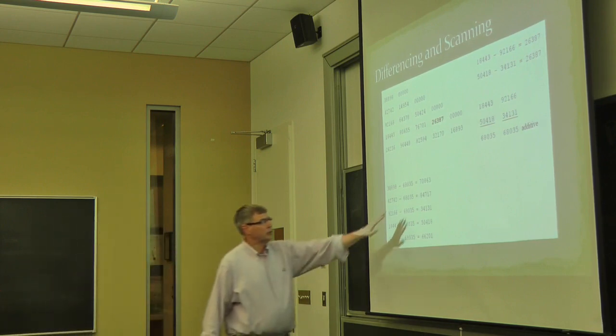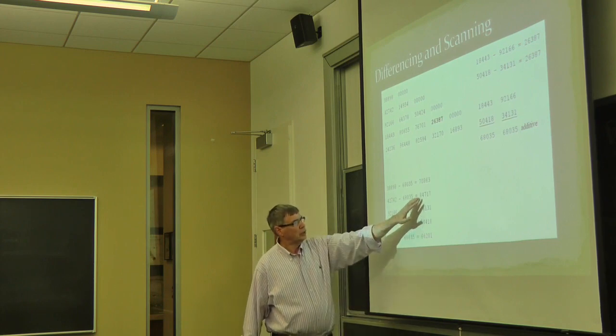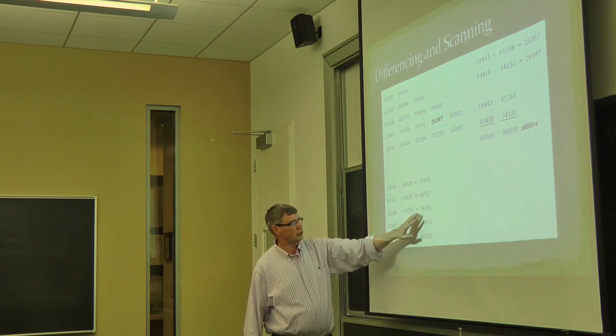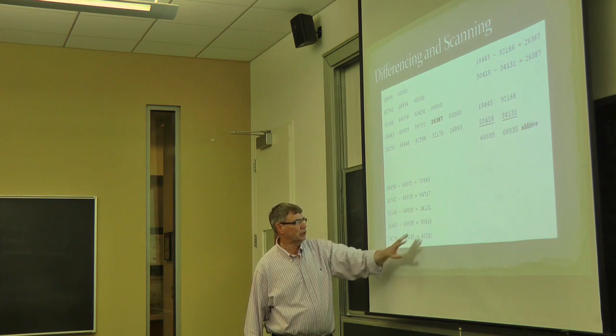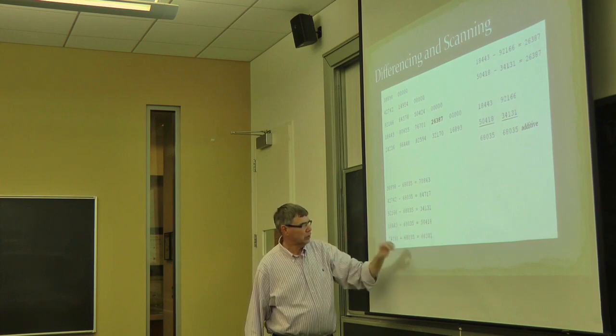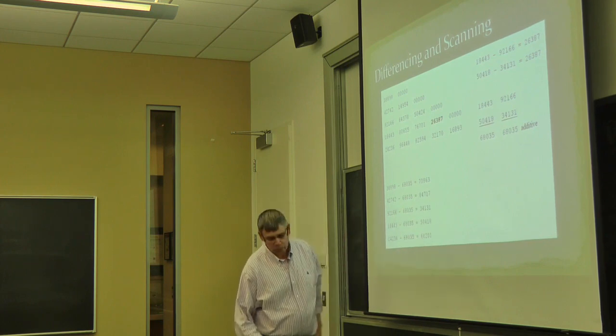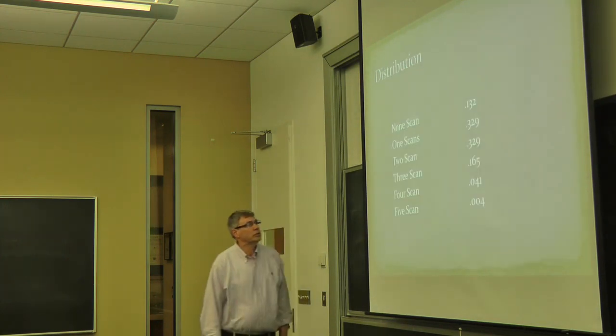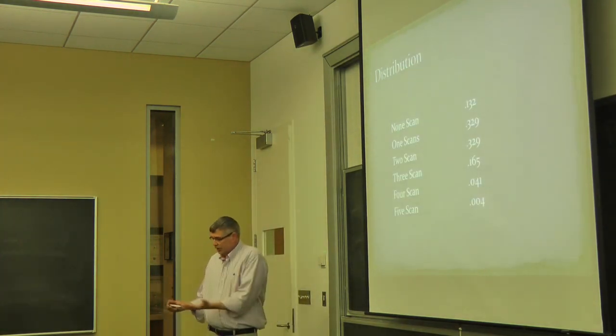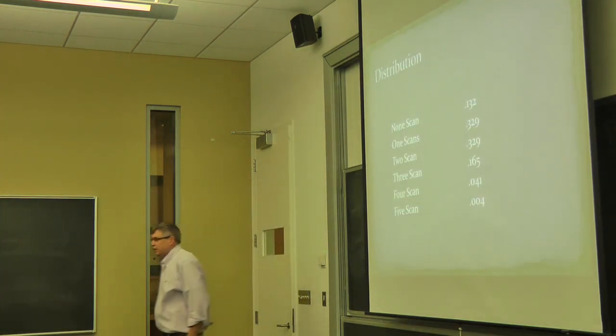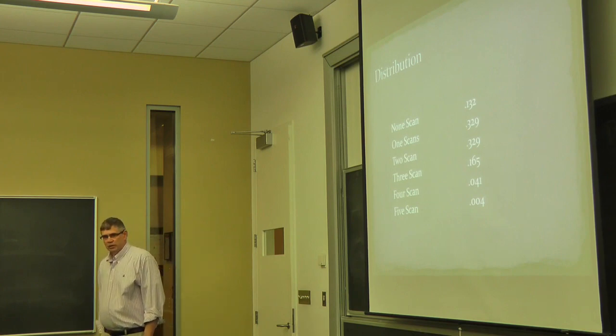Well, so this is 15, 21, 24. That works. 12, 19, 20, 27. That works. 7, 8, 11, 12 works. 9, 10, 18. That works. 12, 14, 15. That one works also. It turns out that all five of them scan. They're all divisible by three. And it's really unlikely that that would happen by chance.